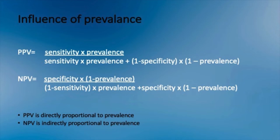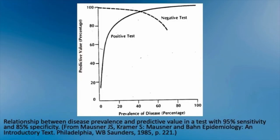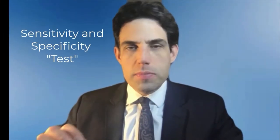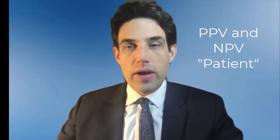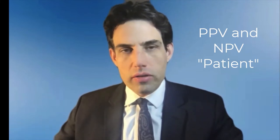PPV is directly proportional to prevalence — as prevalence goes up, PPV goes up. Therefore, care must be taken in interpreting any test for viral infection, particularly when prevalence is too low. On the other hand, if clinical suspicion is high and the patient is symptomatic, infection should not be ruled out on the basis of a negative result alone. The sensitivity and specificity tell you about the performance of the test, while PPV and NPV tell you whether you can act on a result in a particular patient.